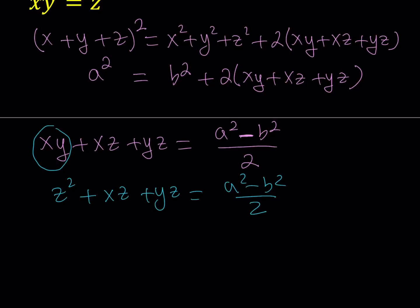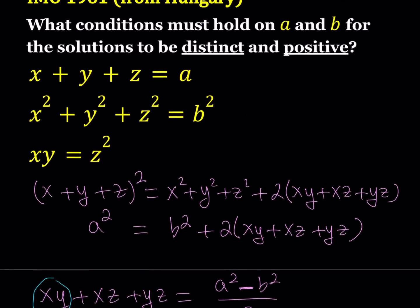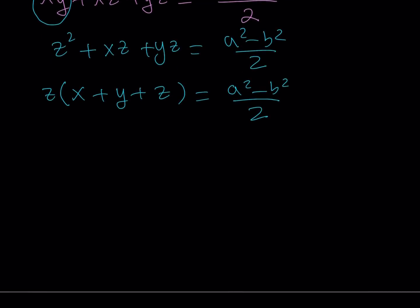Since A and B are given numbers we have a result for this sum. What's really significant here is that we can factor out a Z, and when we do, we get Z times the quantity X plus Y plus Z, which equals A squared minus B squared divided by 2. Since X plus Y plus Z equals A, we can divide both sides by A. So Z equals A squared minus B squared divided by 2A.